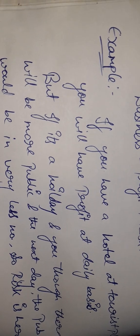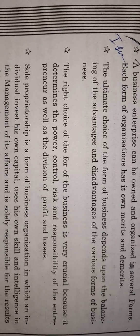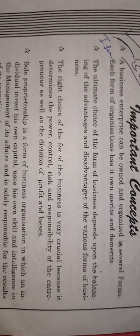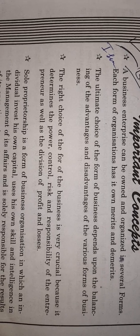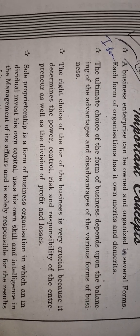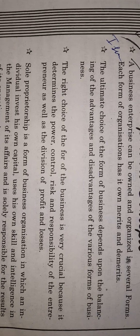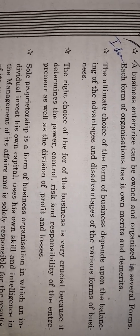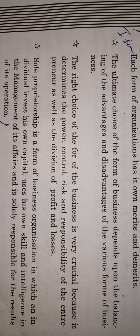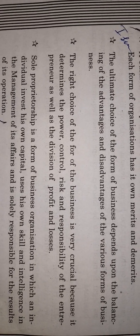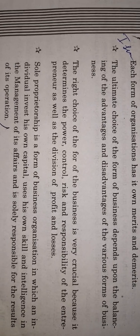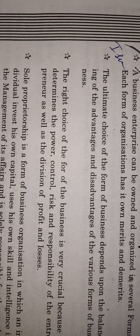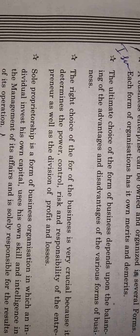Now let's see the forms of business organizations. The right choice of business is very important because it determines the power, control, risk, and responsibility of entrepreneurs, as well as the division of profit and loss. There are two main forms: sole proprietorship and partnership.